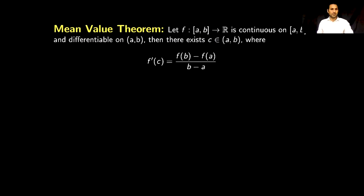Next we will discuss the proof of the Mean Value Theorem. The statement is: if we have a function which is continuous on the closed interval [a, b] and differentiable on the open interval (a, b), then there exists a point c belonging to the open interval (a, b) such that f'(c) = (f(b) − f(a)) / (b − a). In other words, the derivative equals the mean value of the function.